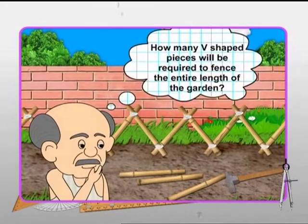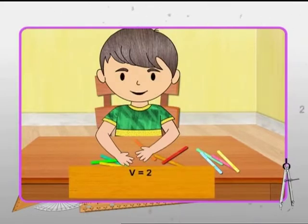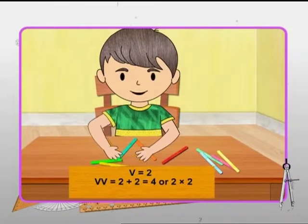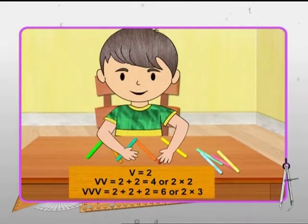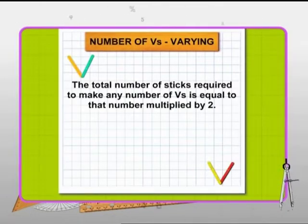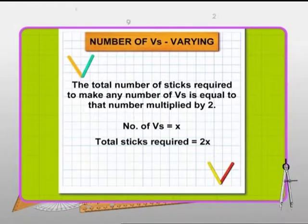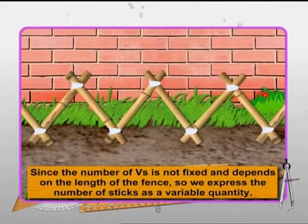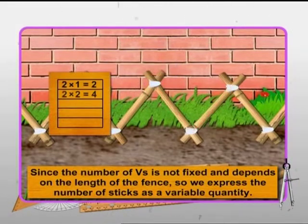Now let's see how to solve our gardener's problem of finding the number of bamboo sticks required to fence the garden. Let's use these colorful sticks. A V can be made using two sticks. For making two Vs, four sticks are required, which is two times two. And for three Vs, it's six sticks and so on. Notice that the total number of sticks required to make any number of Vs is equal to that number multiplied by two. So for X, a variable number of Vs, two into X number of sticks will be required. Thus, the gardener's requirement can be expressed as 2X, where X being a variable can take any value — one, two, three, four, five — depending on the length of the fence.